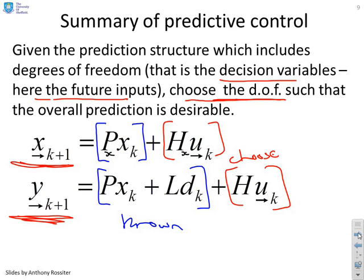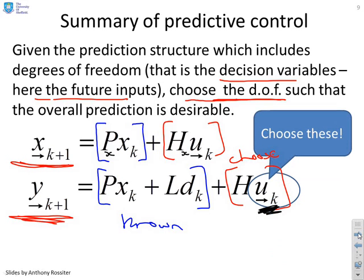How do I choose the future values of my inputs in order to get my predictions to do what I want? So you've got transparency in where your flexibility is by using this nice compact notation.